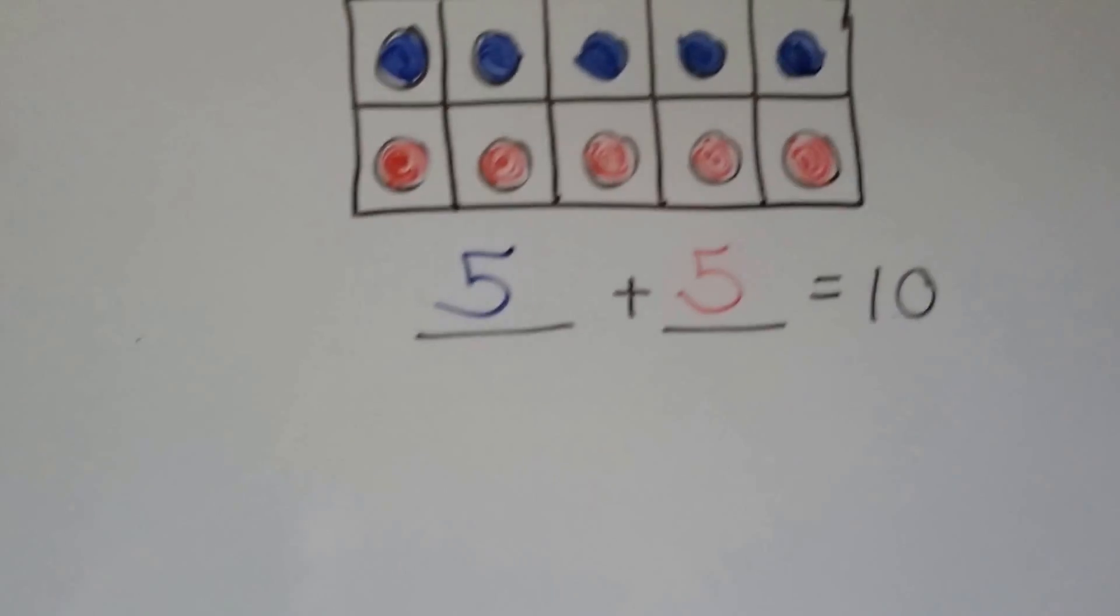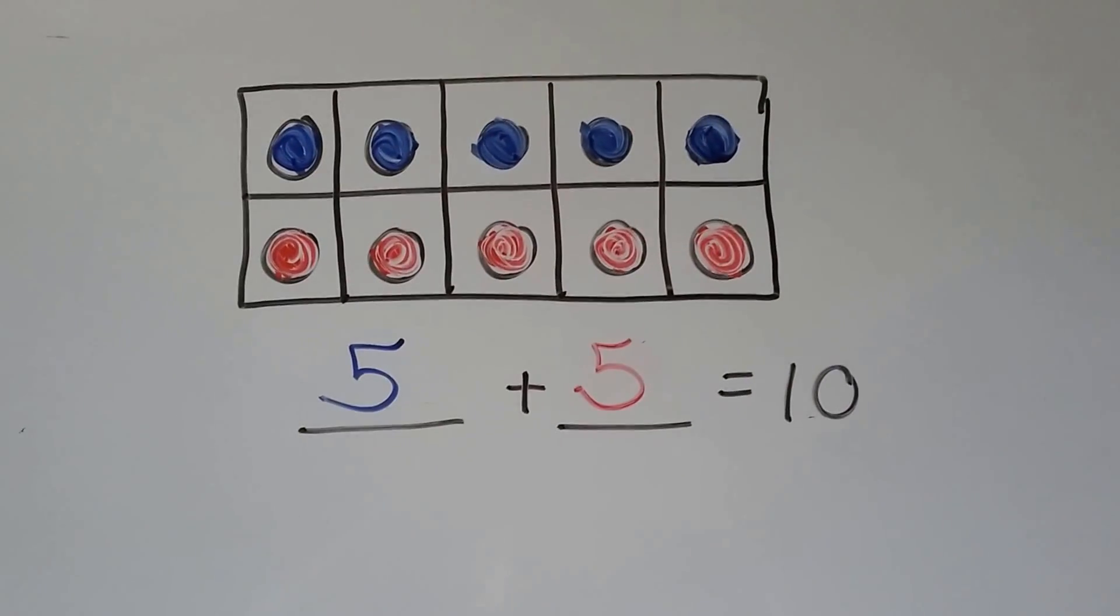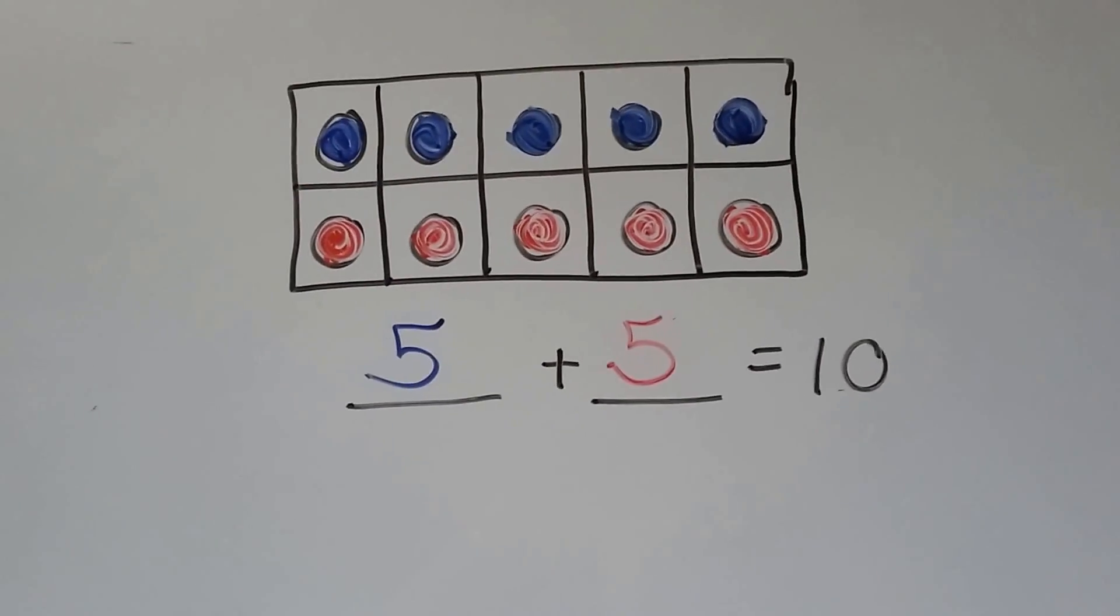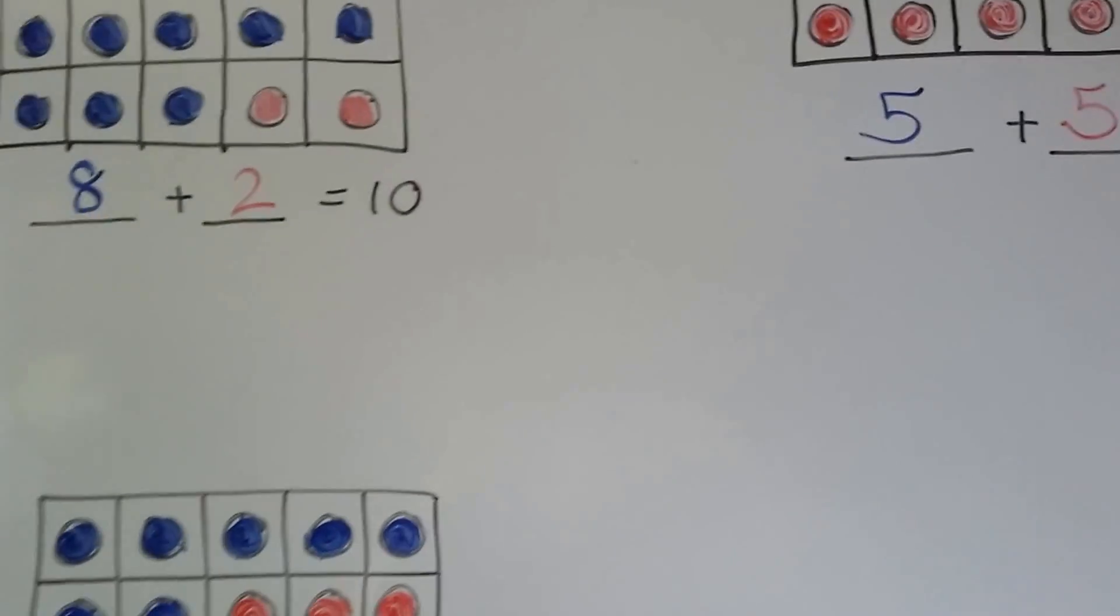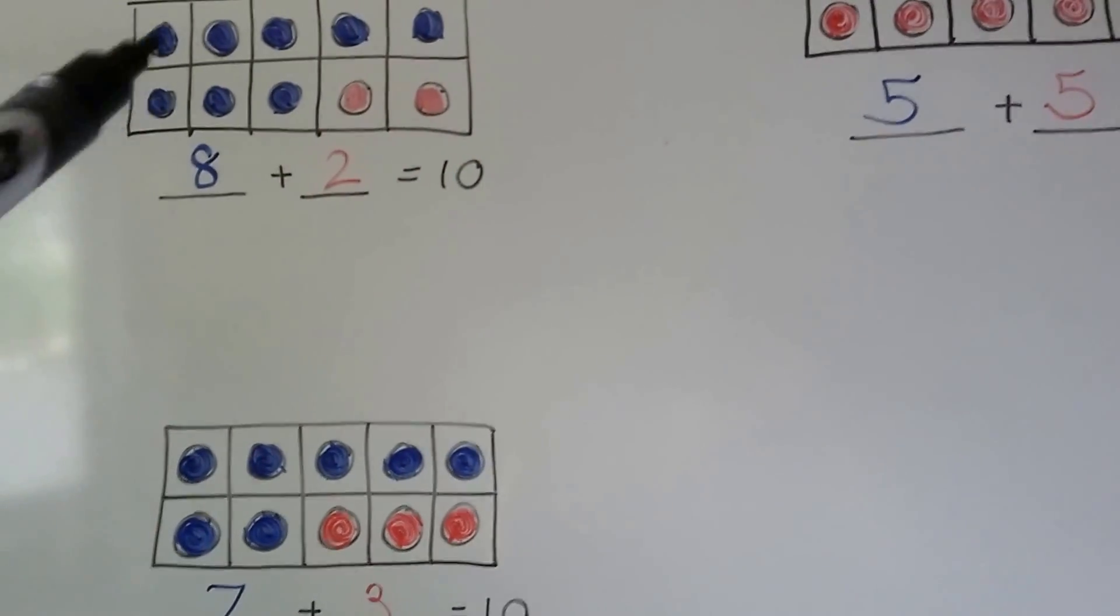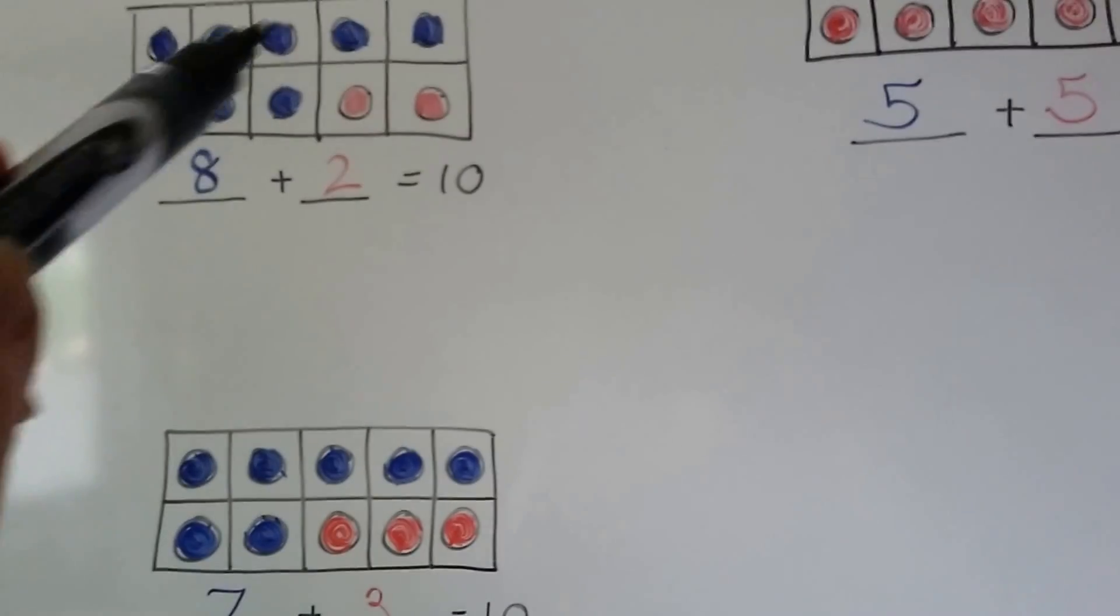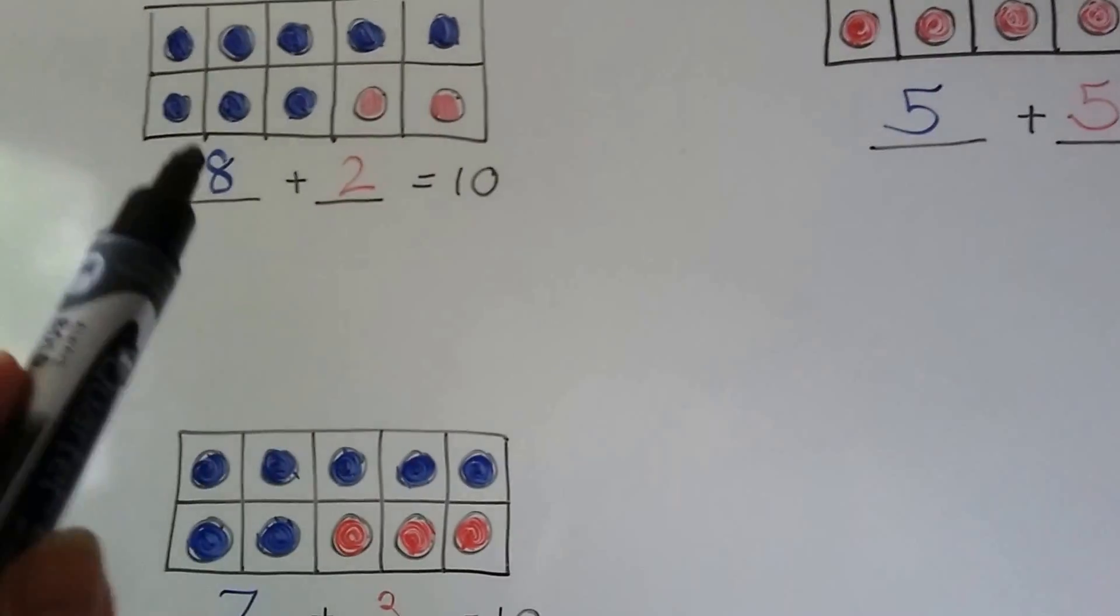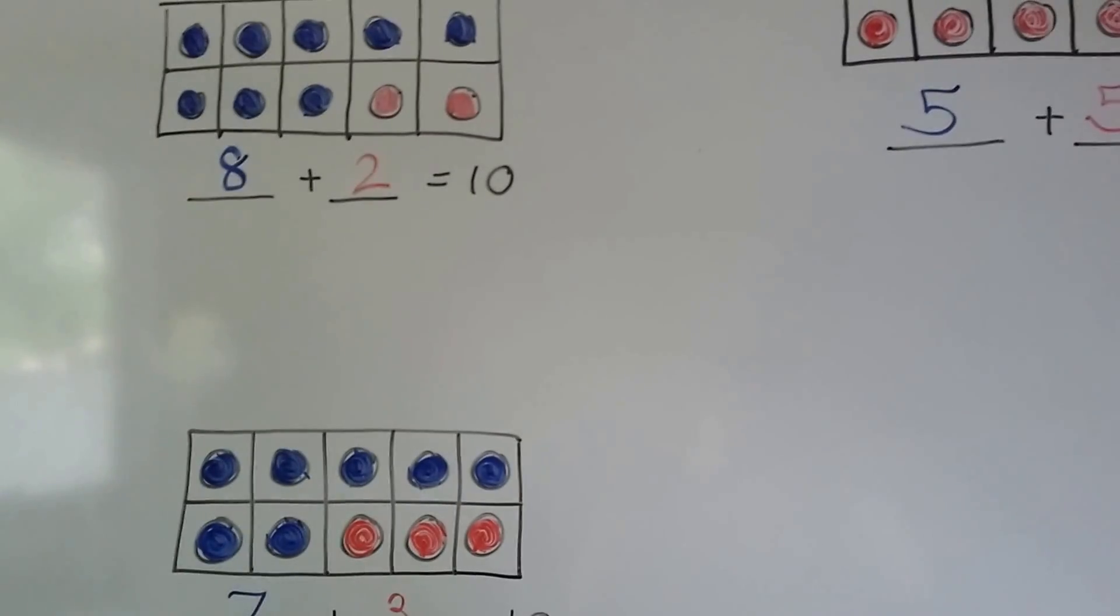If we had 5 blue ones and 5 red ones, we'd have 5 plus 5 equals 10. So in an empty 10-frame, we fill in the number of one color and another number of another color, and we can write our addition sentence.